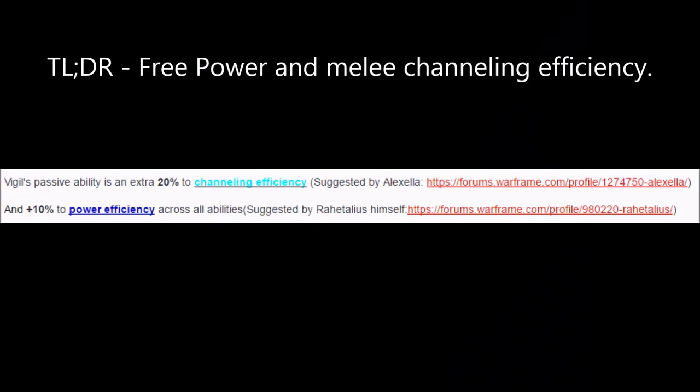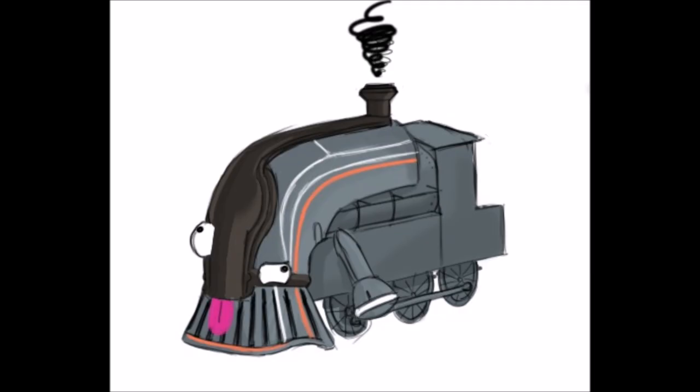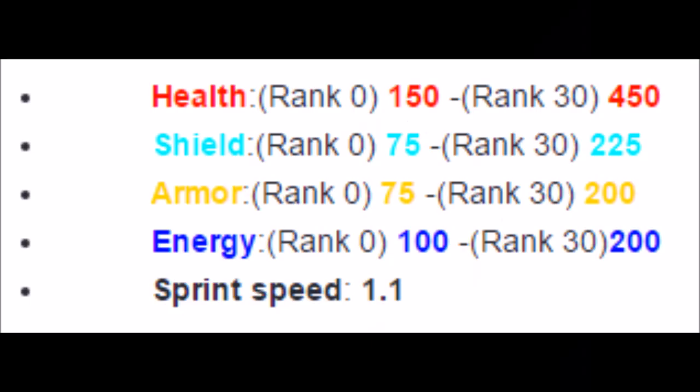Vigil's passive gives him 20% bonus melee channeling efficiency and 10% power efficiency to all of his abilities. Considering that Vigil is an ability combo frame and the bonus efficiency passive he has, I am almost inclined to call him a melee caster frame, but his stats say otherwise.